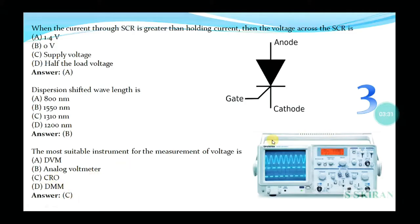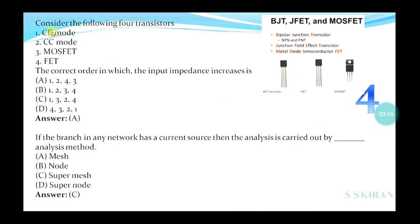The most suitable instrument for the measurement of voltage: DVM, analog voltmeter, CRO, DMM? Yes, option is CRO—cathode ray oscilloscope. See the diagrammatical representation of CRO.